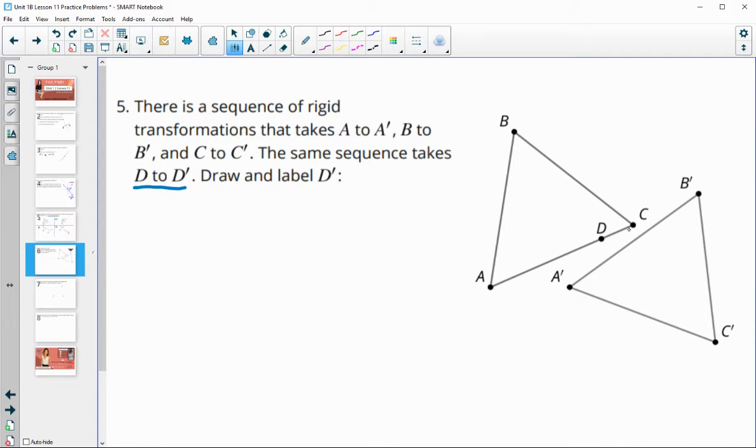D is going to have to be on the segment A prime, C prime. So it's on A, C, so it's going to be on the image of A, C. And then it's pretty close to C, so it's going to stay pretty close, the exact same length. But if you're sketching it, you can just kind of guess. The same distance from C prime as it was from C.